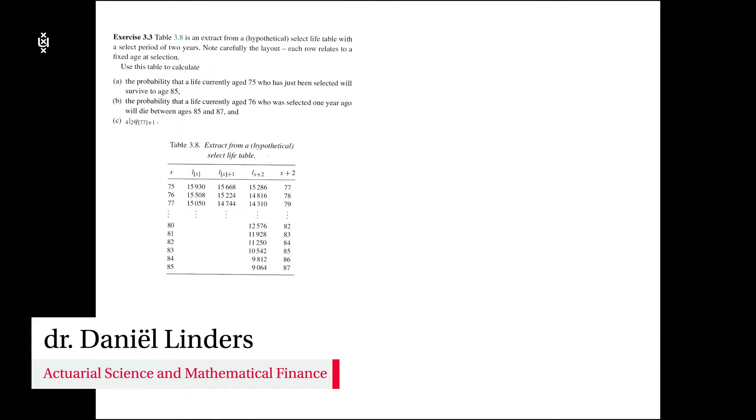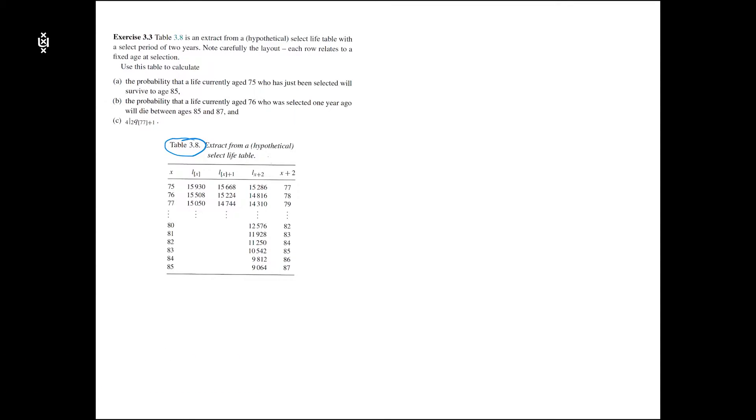In exercise 3.3 we have to use this select life table to determine some probabilities. Let's start with question A, where we have to determine the probability that a life currently aged 75 who was just being selected, so selected at age 75.